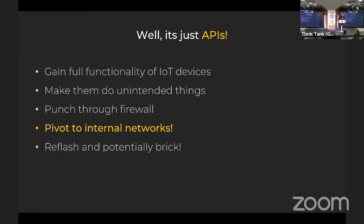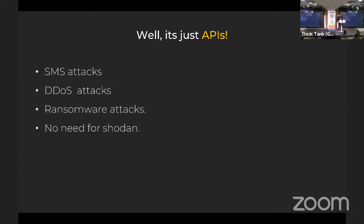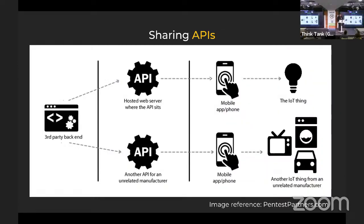Back five or six years ago when I started as a pen tester, everyone said 'it's just an API, what could you do?' Well — I could gain full functionality of all IoT devices, make them do a lot of unintended things, punch through firewalls and pivot to internal networks. And if I was really mean, I could potentially break devices, launch SMS attacks, DDoS attacks, ransomware attacks — no need for social engineering, you just look at the platform and you have access to everything.